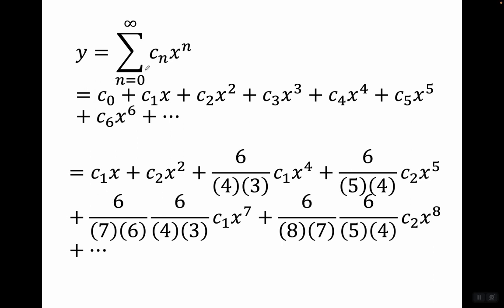Our general solution is y equals the summation of c sub n x to the n, that is c zero plus c one x plus c two x squared plus higher terms. Since c sub zero equals zero, that drops out. We get c one x plus c two x squared. C sub three drops out. C sub four is six over four times three times c one times x to the fourth. C sub five is six over five times four times c two times x to the fifth. C sub six drops out. Then we have the messy expression times c one times x to the seventh, the messy expression times c two times x to the eighth, and so on.